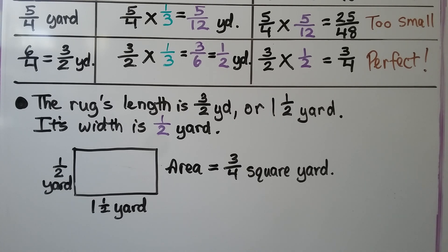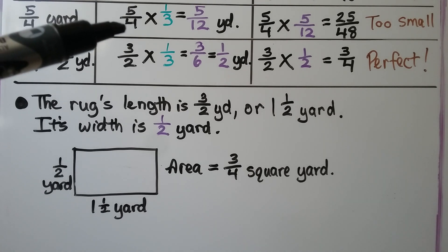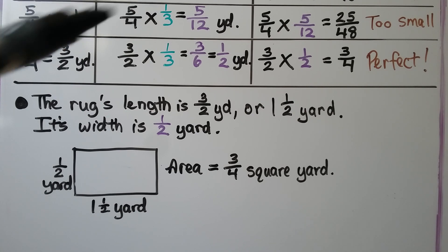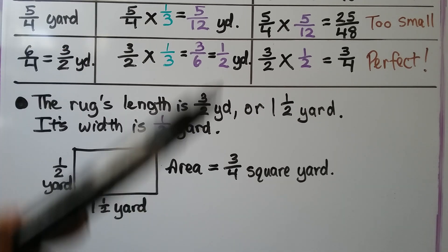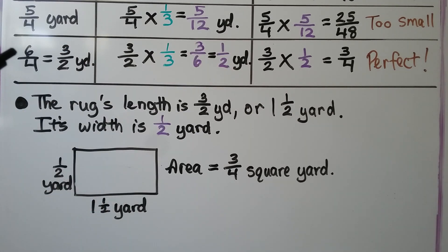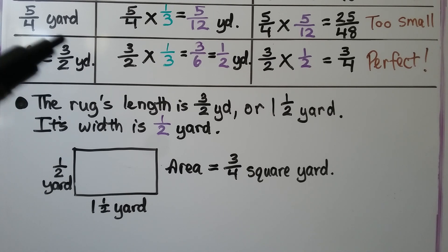We guessed what the length was, checked it by multiplying by one-third. If it was too large or too small, we revised our guess, and we kept doing it until we found one that fit.